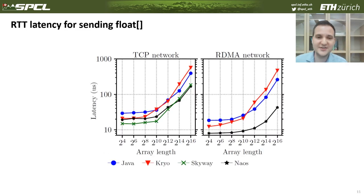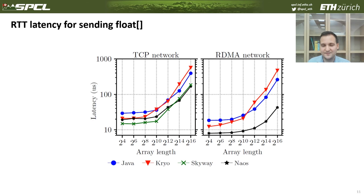Now I'd like to go to the evaluation and focus on the key results. We evaluated the latency of sending an array of floats, which is a simple but important data type — more complex data types are covered in the paper. In the case of RDMA networking, NAOS can achieve a latency of only 8 microseconds, enabling low-latency communication in RDMA Java applications. As you can see, it can beat all existing serialization libraries even over RDMA networks.